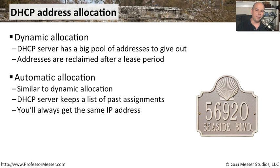There's also a method called an automatic allocation, which is a very similar process to dynamic allocation. But what the DHCP server tries to do is keep a list of all of the past assignments. And if you ever show up on the network again, it's going to reserve and hold that particular IP address just for you, and give you exactly the same IP address you had the last time. That automatic allocation is less efficient with IP addresses, but if you have a very large pool available, it's a smart way to almost guarantee you get the same IP address every time you connect to the network.